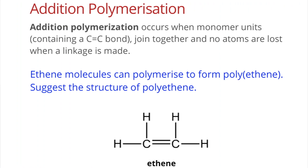An example of a molecule that undergoes addition polymerization is ethene, and in fact all alkenes can undergo addition polymerization because they are unsaturated. Basically, what happens during addition polymerization is when your monomer units join together, the carbon-carbon double bond breaks. No atoms are lost in the process. A monomer is a small molecule that joins together to give your polymer, which is made up of the joining of many monomers.